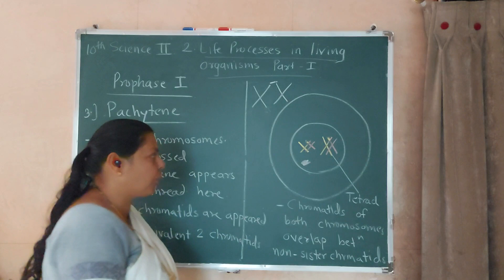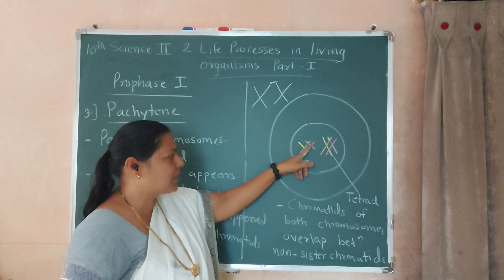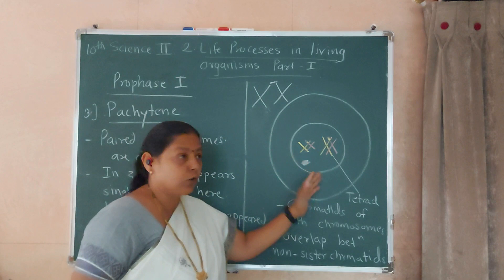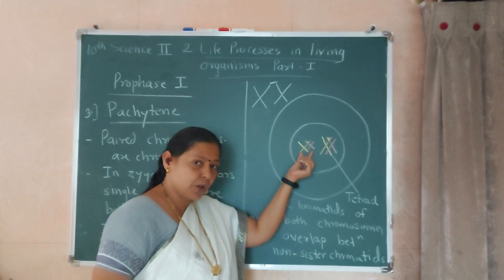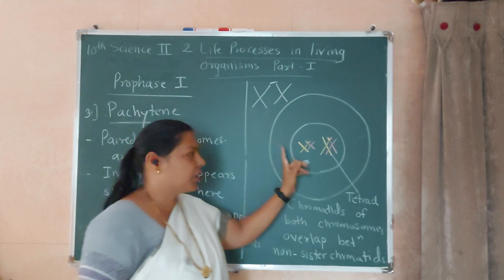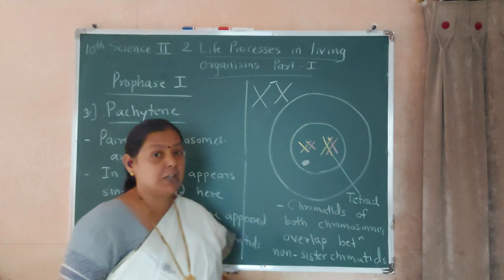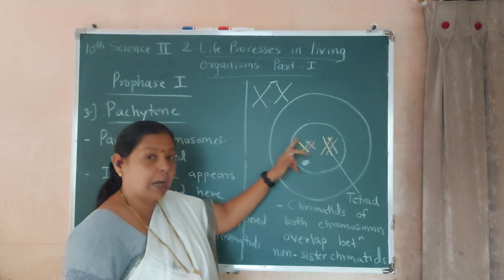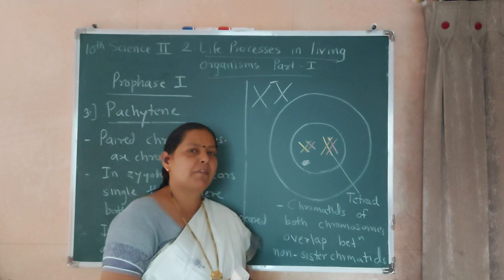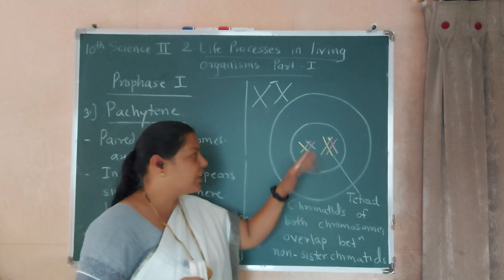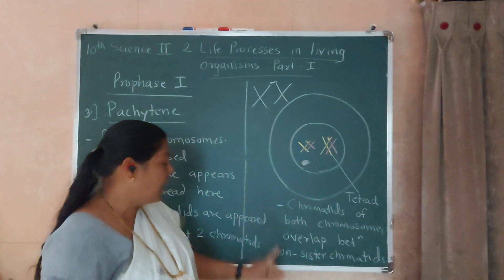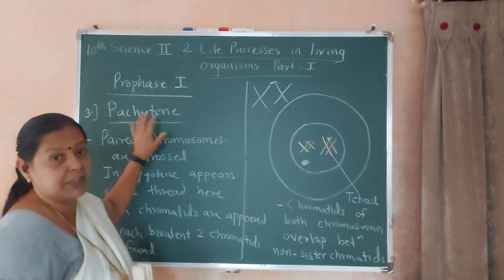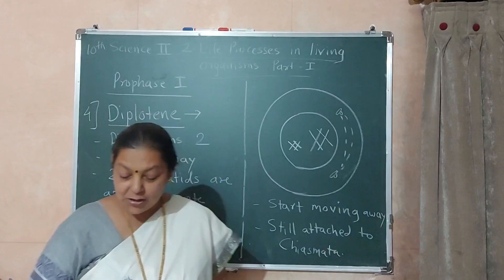Due to crossing over, one chromosome from the maternal and one from the paternal exchange genetic material. The process occurring in pachytene involves an exchange of genetic material, and this process is called crossing over. Crossing over takes place between the non-sister chromatids.